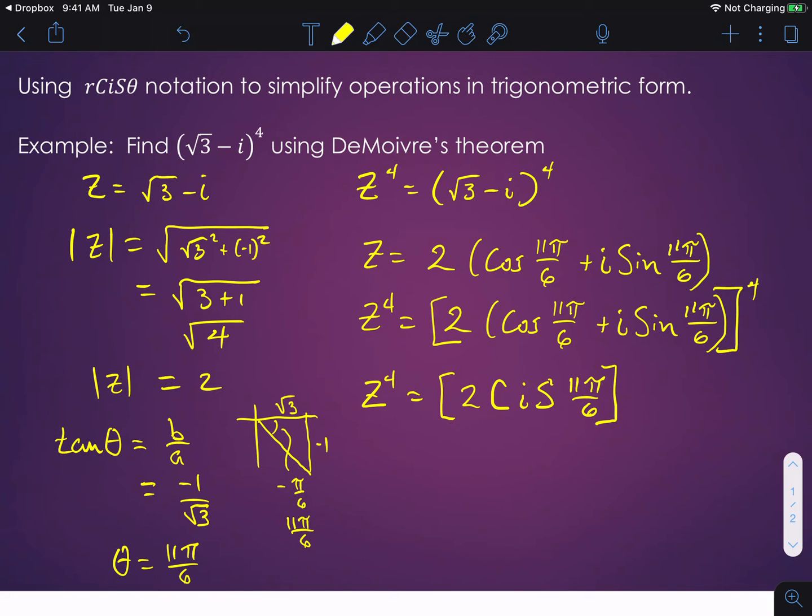So you see what we've done is that we've taken our theta, which is 11π/6, and we've just put it at the end of this expression cis, and we call that cis. And 2 is the magnitude. So this is what we refer to as r-cis-theta notation.